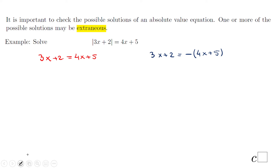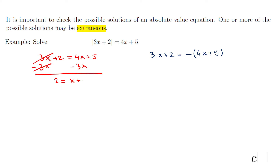Now we solve each equation. For the first one, I'll subtract 3x — I think that's the easiest way, though not the only way. We end up with 2 equals x plus 5. The last step: subtract 5, and we have x equals negative 3.